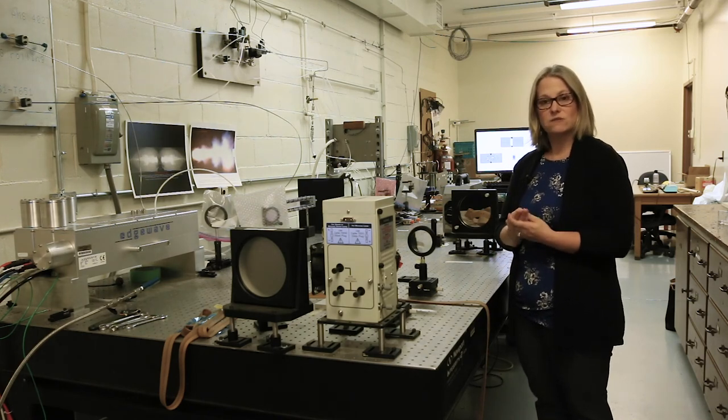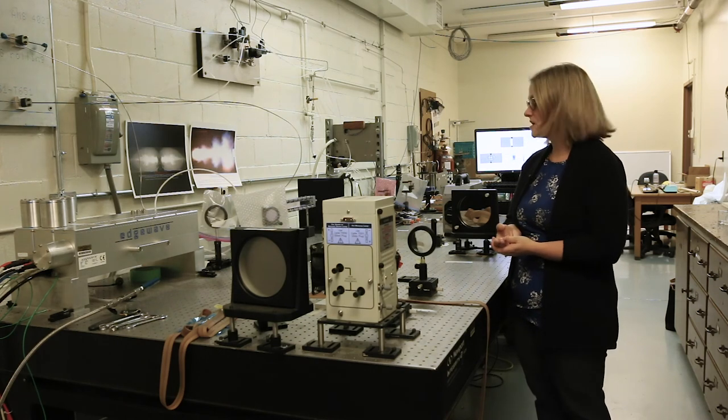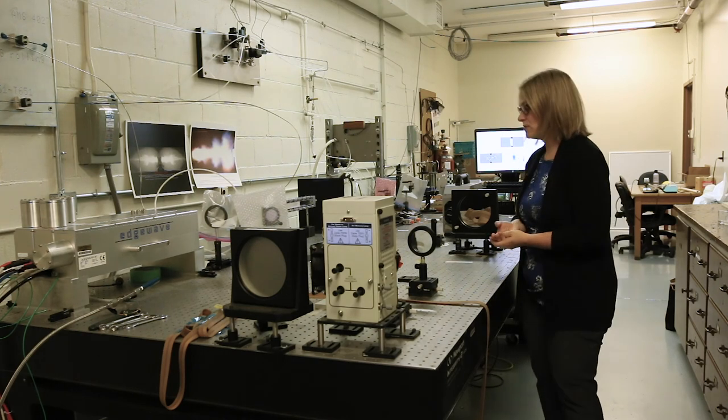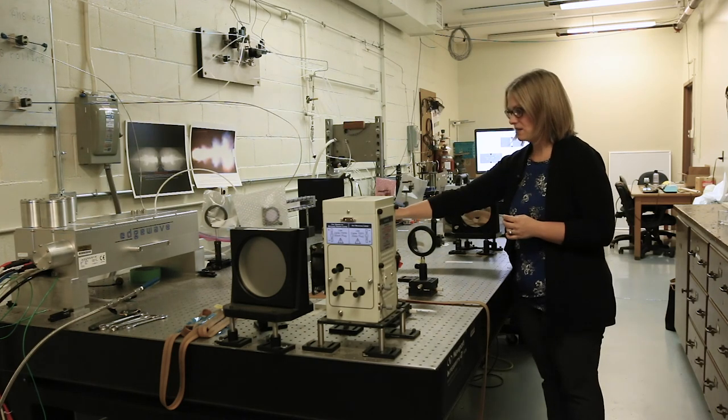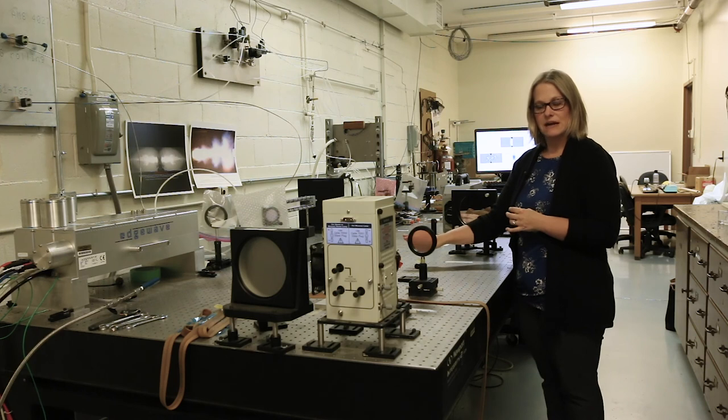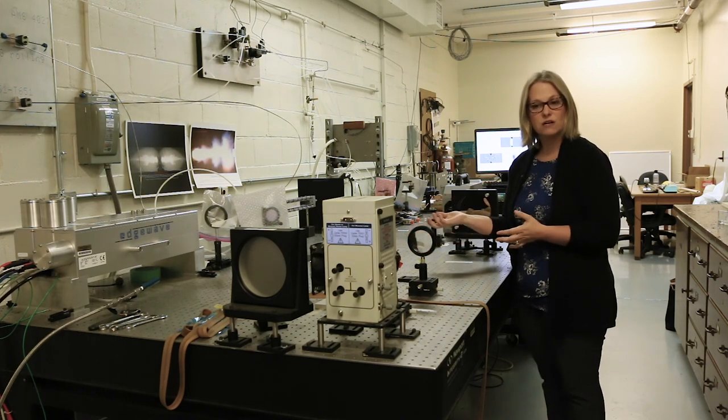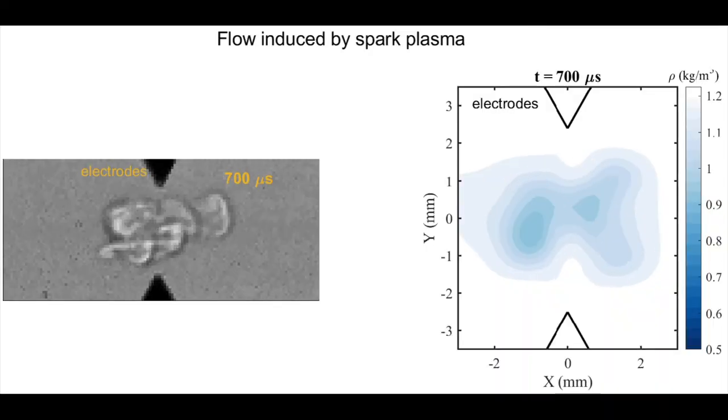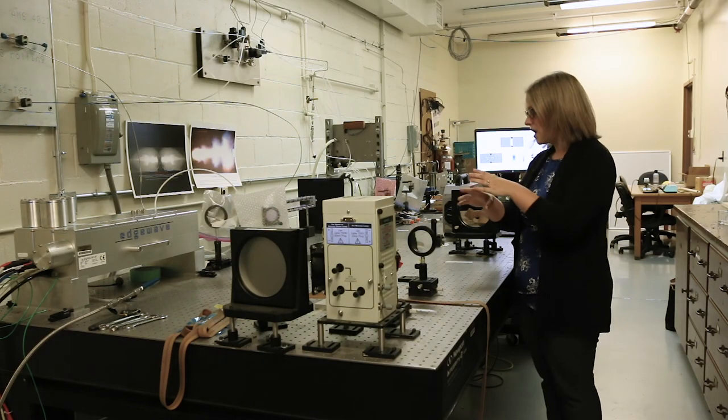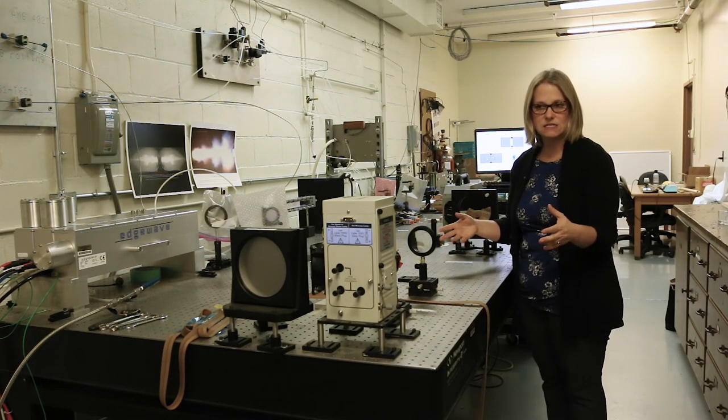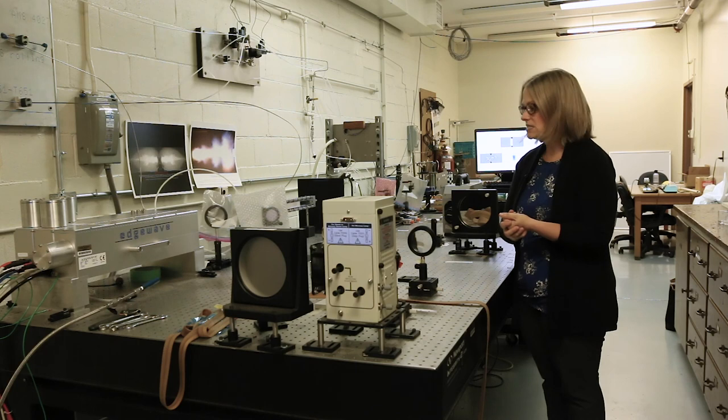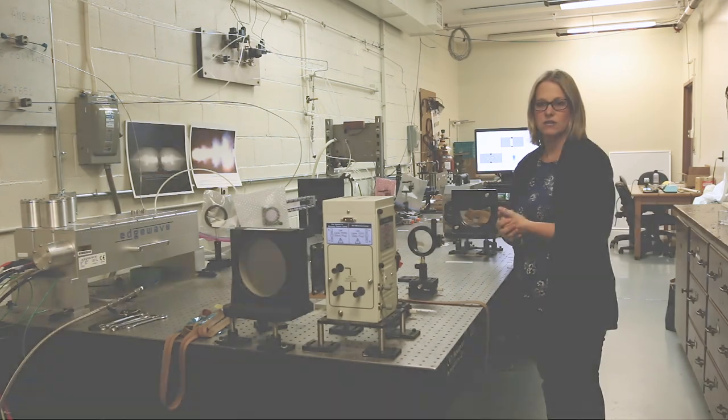The third diagnostic allows us to measure the flow density and that measurement technique is called background oriented Schlieren and it's a very simple measurement technique where here we have a dot pattern which we place behind our field of view of interest and by looking at the apparent distortion of the dots when you visualize them through the density gradient field we can actually extract the density of the flow. So the result is for a given experiment we can simultaneously see the flow using the Schlieren visualization and measure the velocity and density using the PIV and background oriented Schlieren.